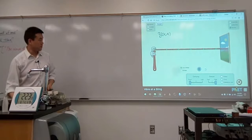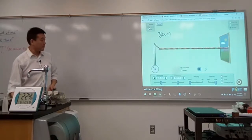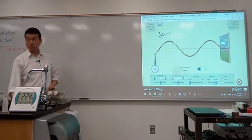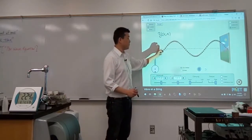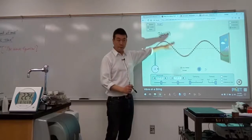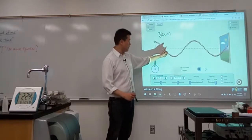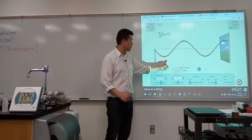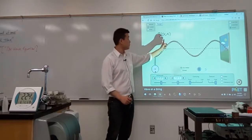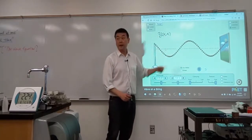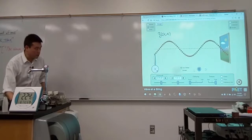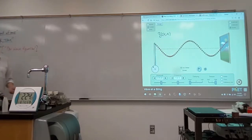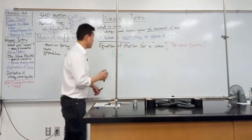If I put the wave into oscillation, the height of the bead can be described as a function of position — first bead, second bead, third bead, fourth bead, and so on — they have different heights. But given one bead, it's going to have a different position at different times. So it's a function of position and time. That's the function we are trying to specify with this wave equation.